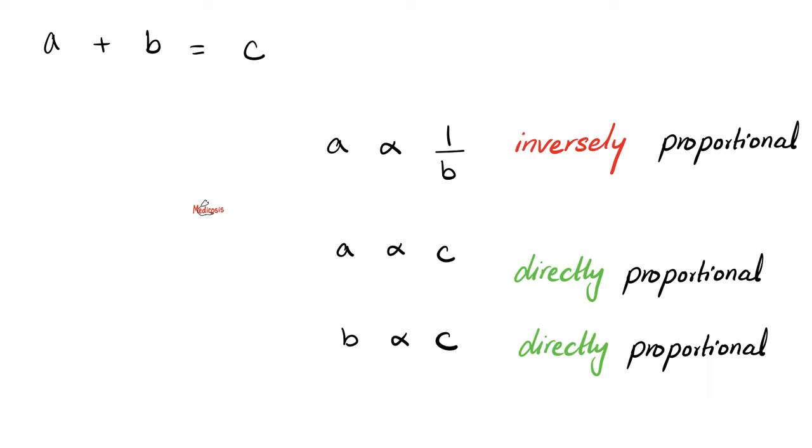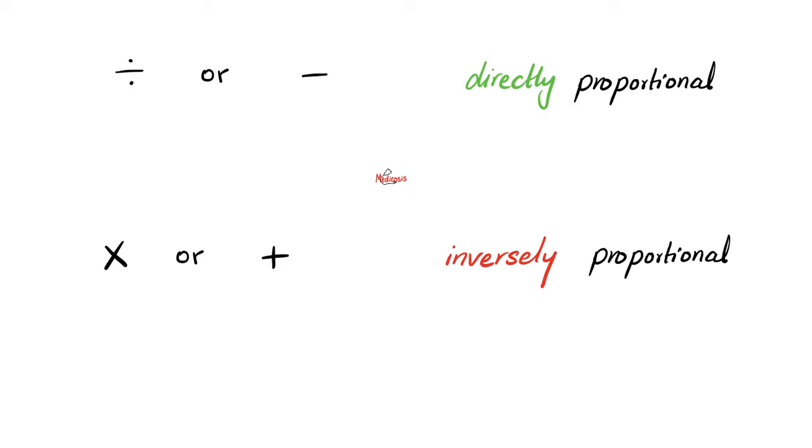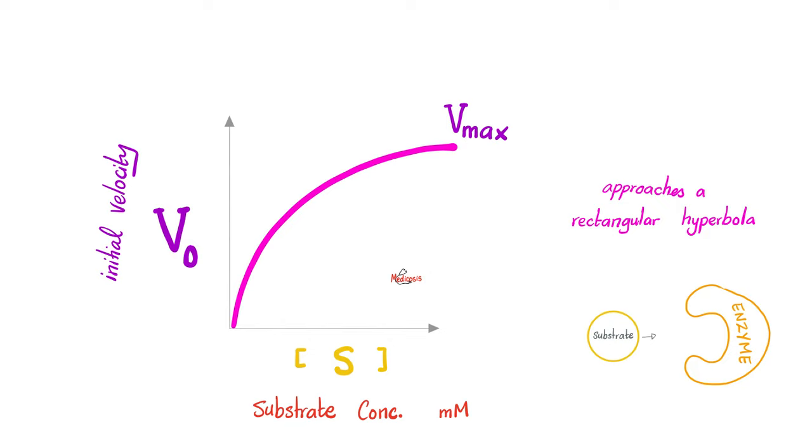Can we do this with a plus sign in between? Yeah, same thing. Between A and B, inverse relationship, as A goes up, B goes down, and vice versa, provided that C is constant. Between A and C, there is direct relationship. Between B and C, there is direct relationship. How do I remember all of this? Whenever you have two entities that are divisible by each other, or subtractable from each other, the relationship between them is direct. Conversely, if they are multiplicable by each other, or additive to each other, it's an inverse relationship.